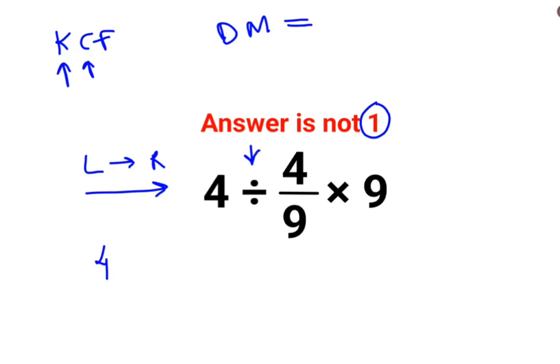C stands for changing the division sign to multiplication. F stands for flipping or taking reciprocal of 4 upon 9, which is 9 upon 4.